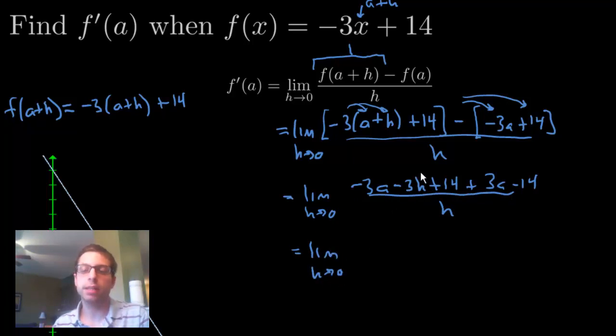Don't forget the limits. Now, what cancels? We have a -3a and a positive 3a, so those cancel. We have a 14 and a -14, those cancel. All that's left is -3h on top and an h on the bottom. And these h's cancel. And remember, you're done when this denominator of h goes away, which we just did.